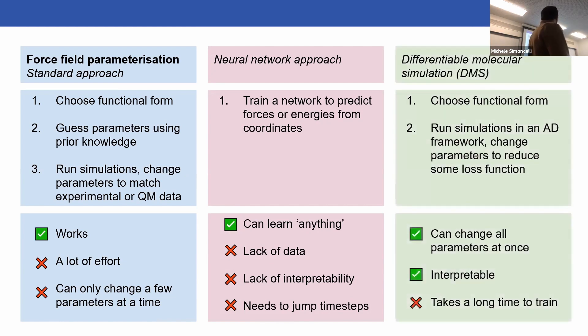I'm promoting a third way: differentiable molecular simulation. This is the best of both. You choose the functional form, then run simulations in an automatic differentiation framework, which I'll describe. That allows you to change the parameters to reduce some loss function. This has the advantage that you can change all parameters at once while maintaining interpretability because you're using a standard functional form. But it does have the downside that it takes a long time to train.